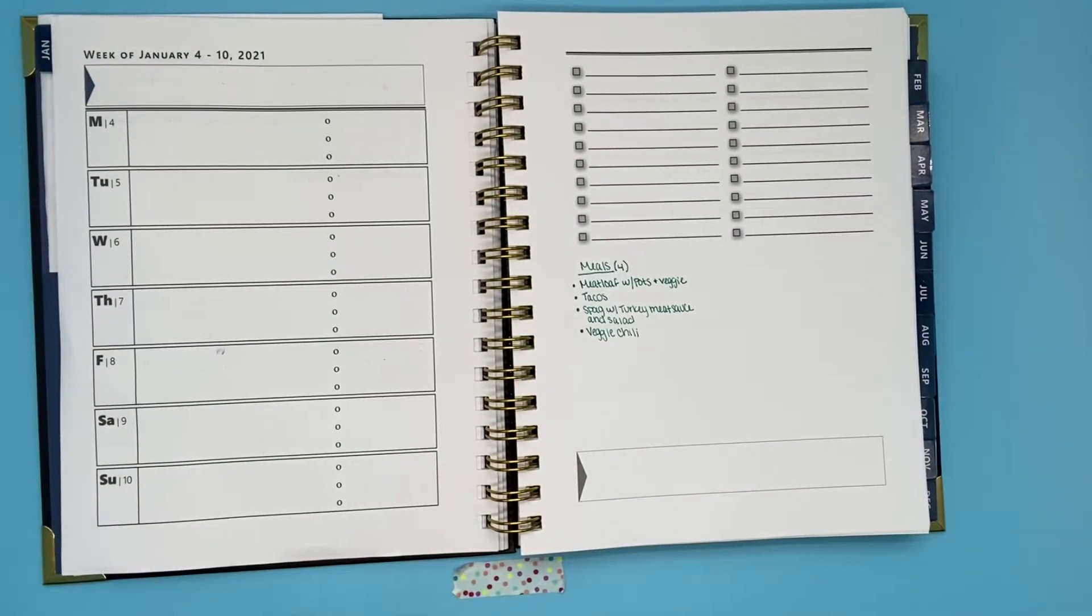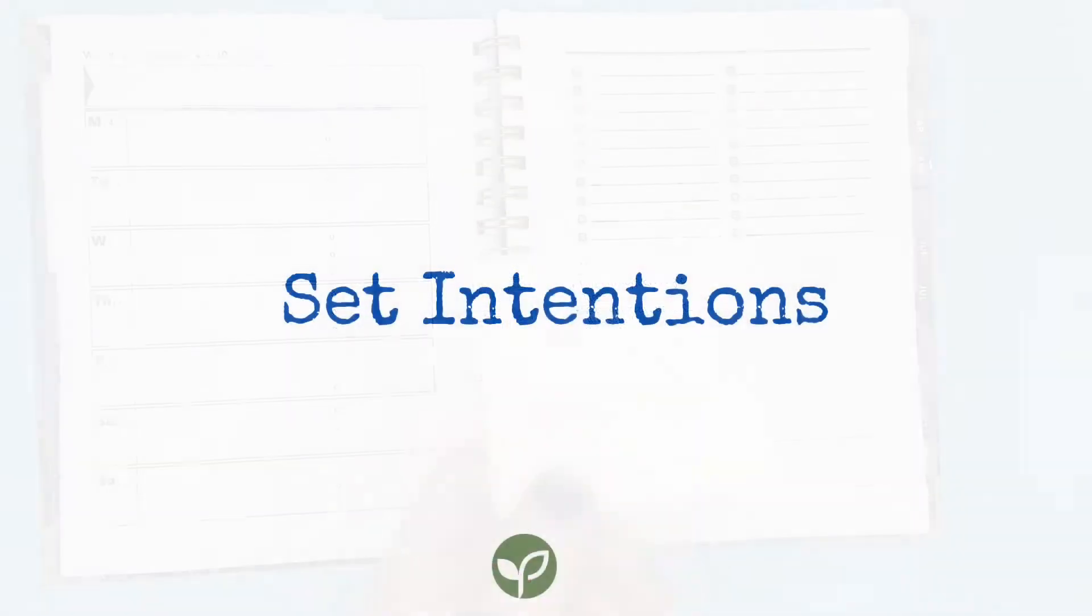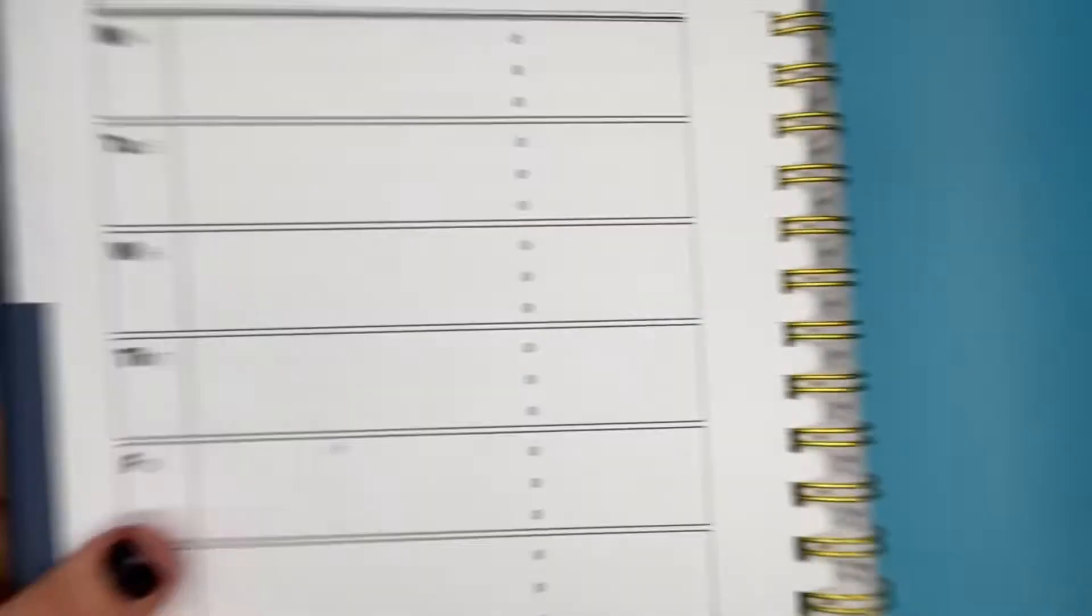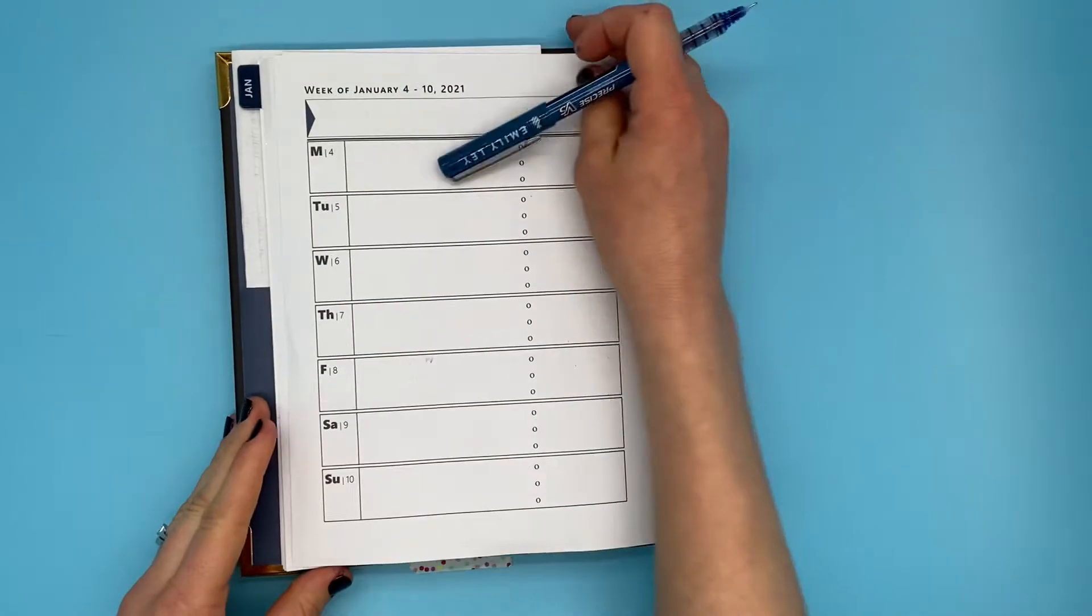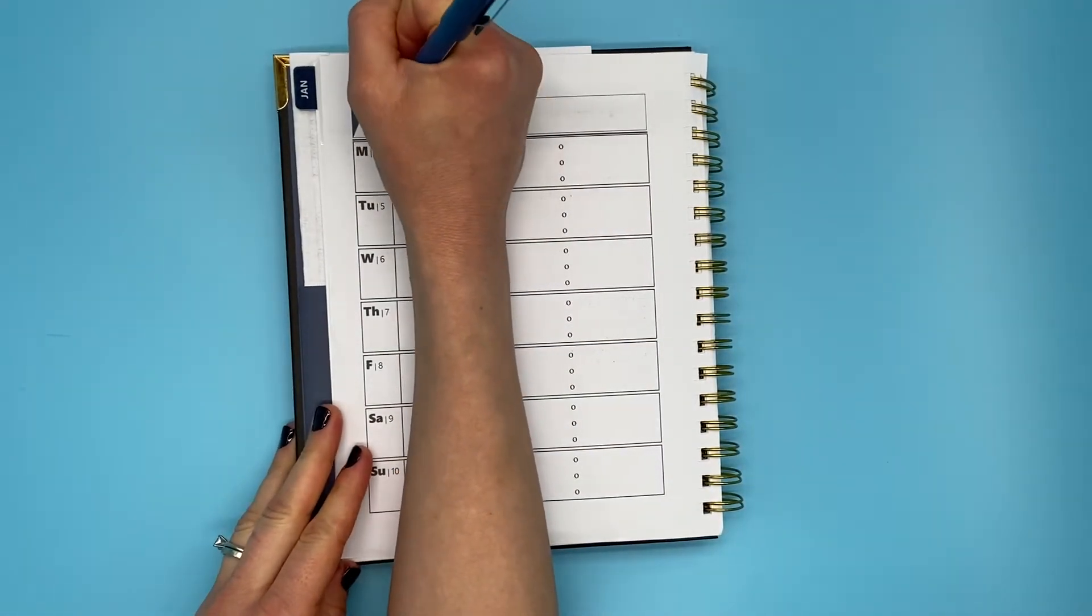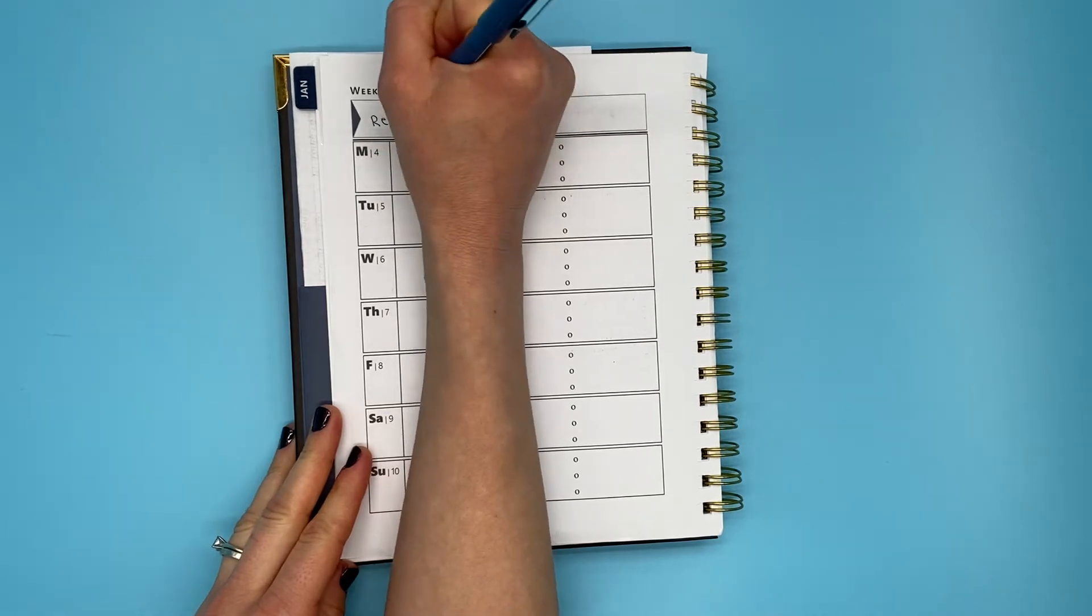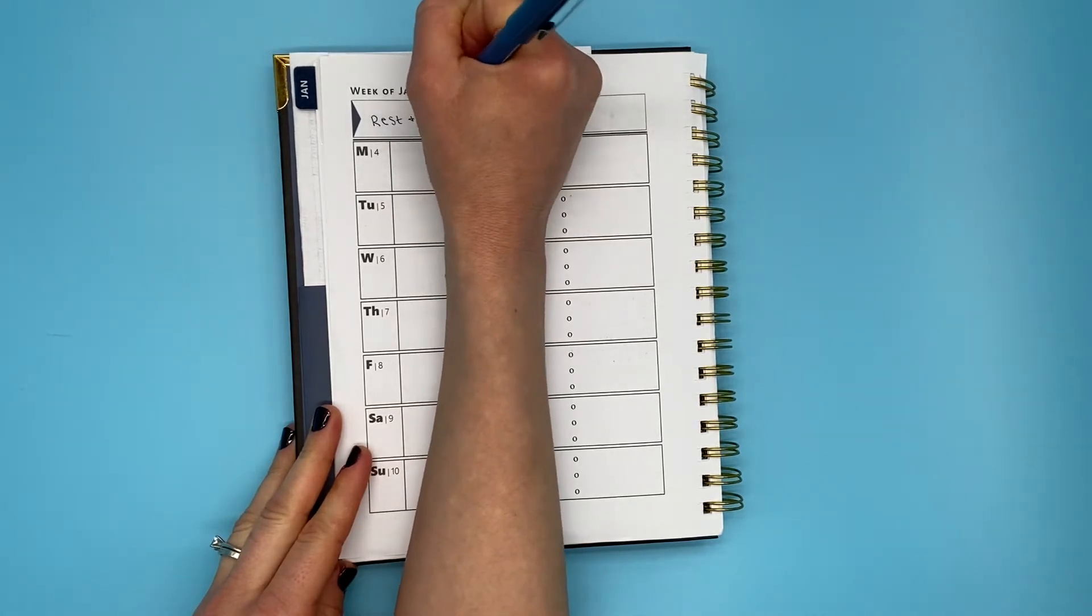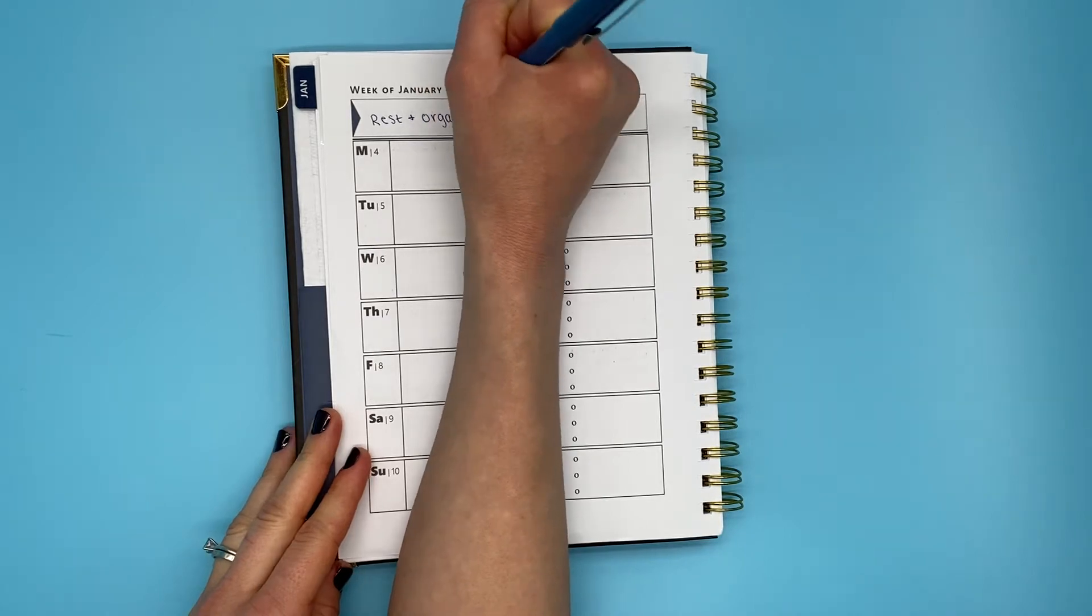All right, so let's get started. The first thing I do is set intentions. At the very top of the planner, I write my intentions for the week. Since it was a crazy last couple weeks, I really wanted to prioritize rest, and I will be taking down all my Christmas stuff too. So rest and organization.